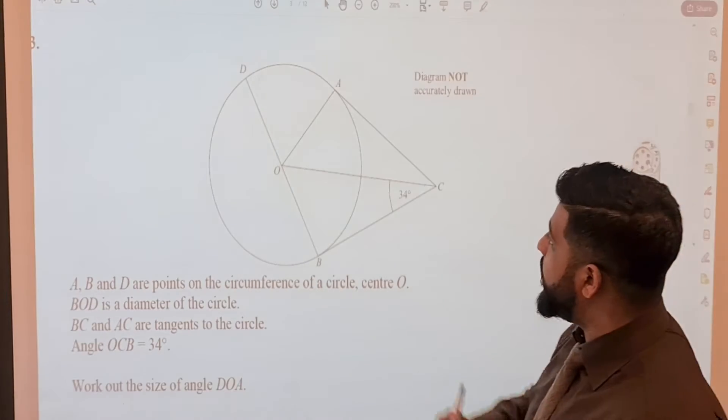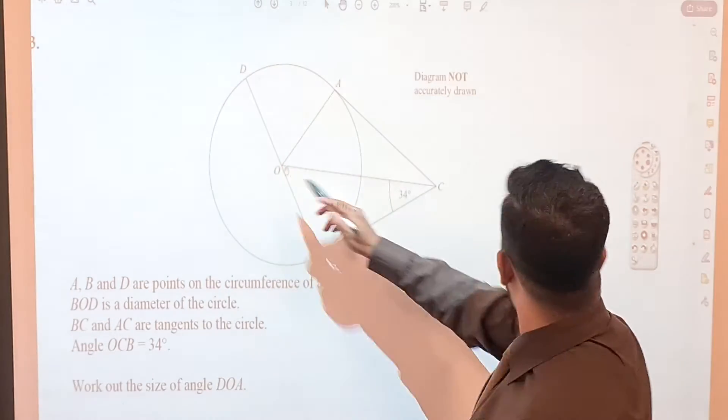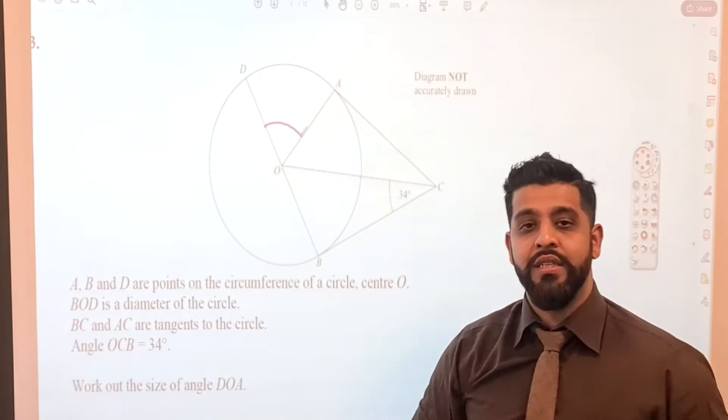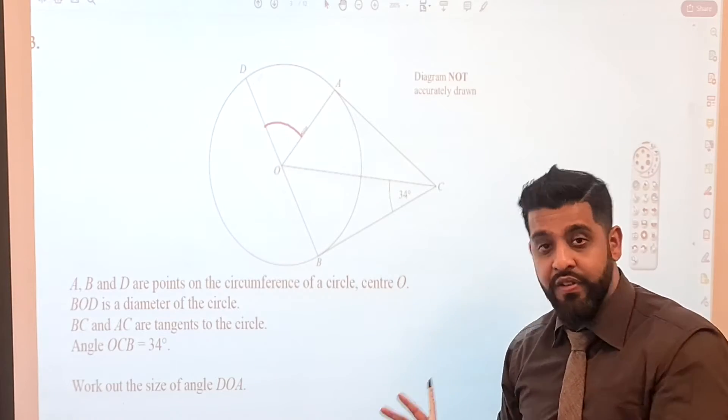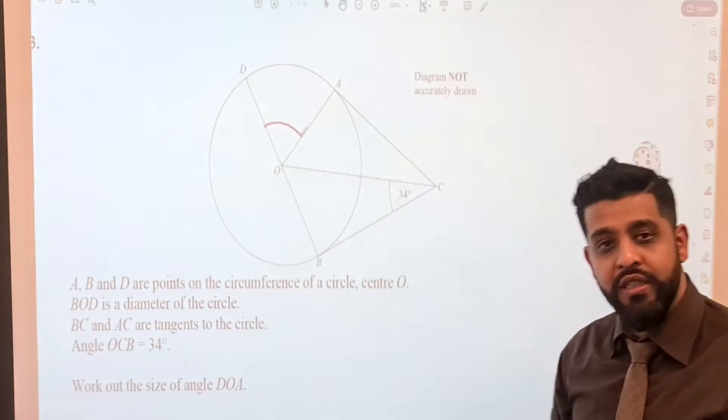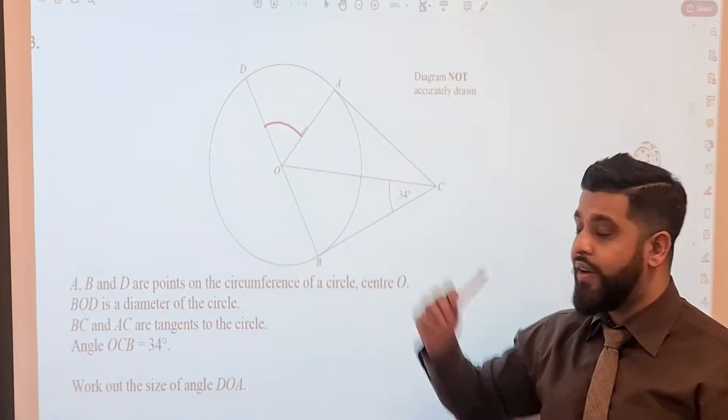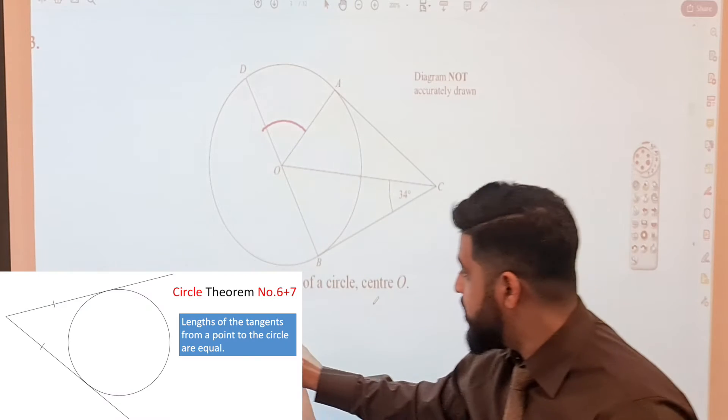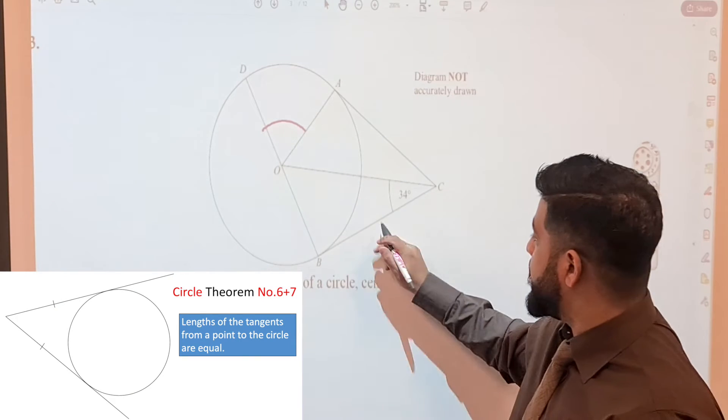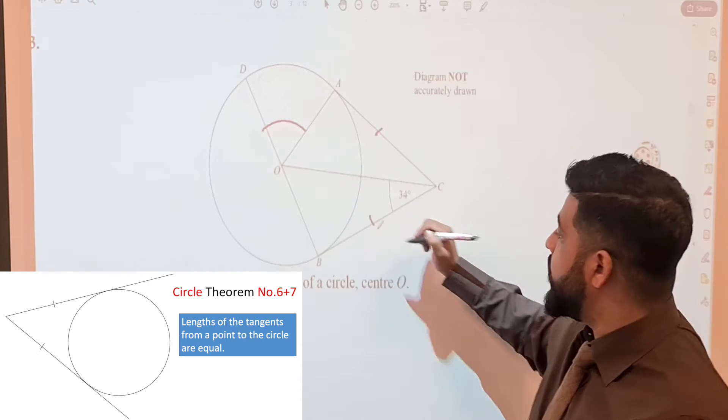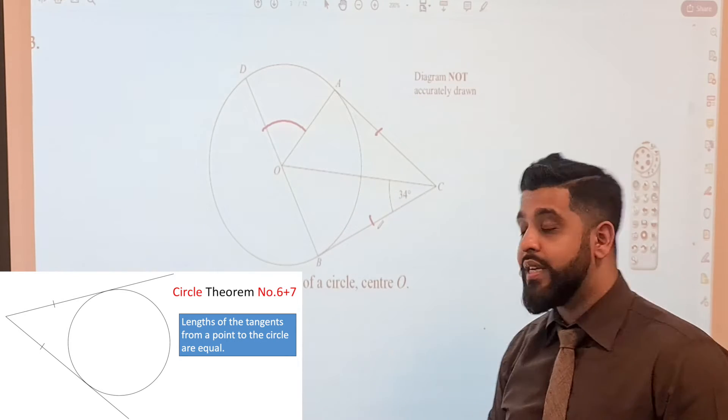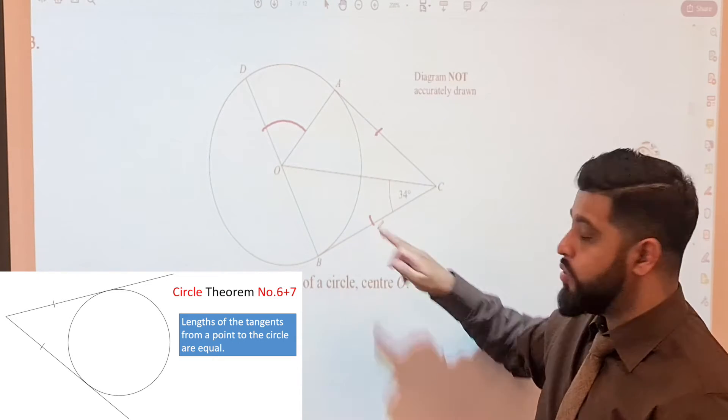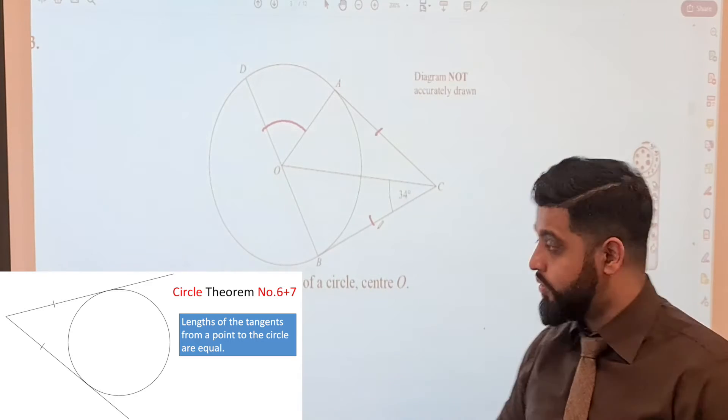So let's highlight where DOA is. So here's D, here's O, and here is A. So DOA, we are looking for this angle there. So that's our mission. Now we will use all the information that we have, the theorems that we know, and we will find what this angle is. We are told that we have two tangents to this circle right there. And we know from one of the circle theorems, theorem number 6, that from a point outside the circle, if you have tangents to a circle, then those two lines are equal.